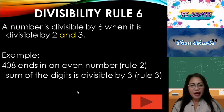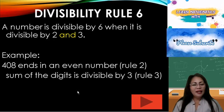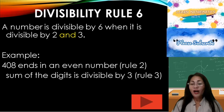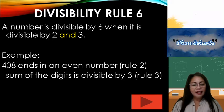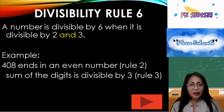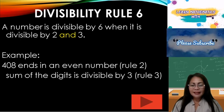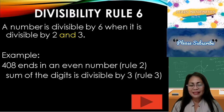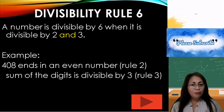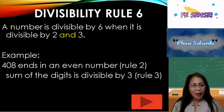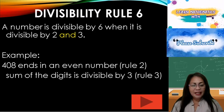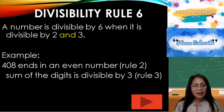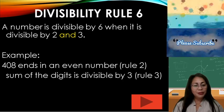Divisibility rule 6: A number is divisible by 6 when it is divisible by both 2 and 3. Example: 408 — 408 ends in an even number, it ends with 8, so that satisfies rule 2. Now let's get the sum: 4 plus 0 plus 8 equals 12. Is 12 divisible by 3? Yes — 12 divided by 3 is 4. That is rule 3. Therefore, 408 is divisible by 6 because it is divisible by 2 and 3.